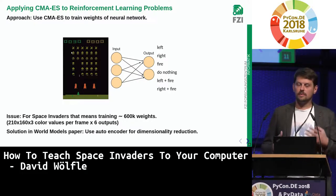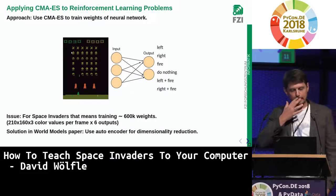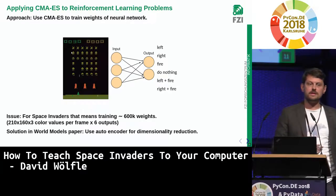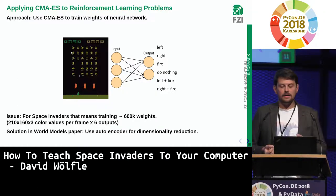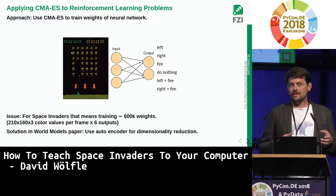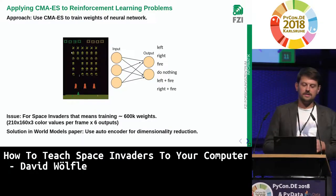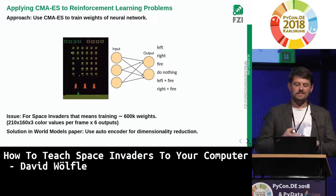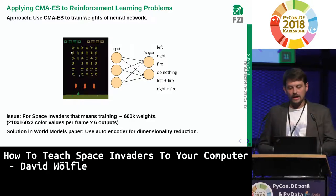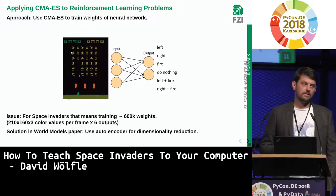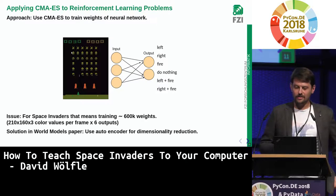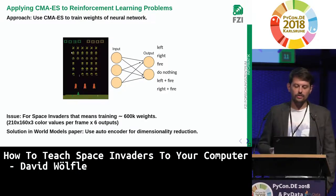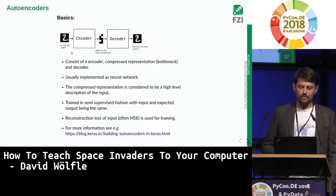Now, how do we apply this to Space Invaders? The most direct approach maps observations to actions — six integers corresponding to left, right, fire, do nothing, left-and-fire, and right-and-fire. The tricky part is that the input image is 210 by 160 by 3 color channels, roughly 100,000 values, mapped to 6 outputs — leaving roughly 600,000 weights to optimize. But CMA-ES only works below roughly 1,000 dimensions, so we need an autoencoder to reduce dimensionality.